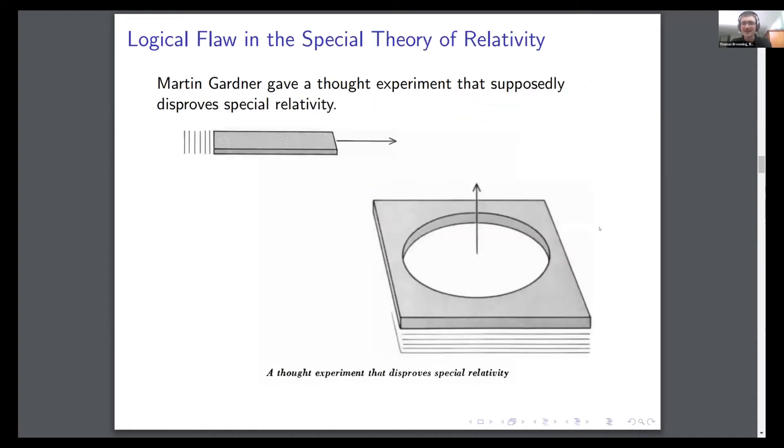But at the time, people didn't really understand computers and machine learning wasn't really a thing, so who knows? The next one was this apparent logical flaw in special relativity. This is apparently a well-known thought experiment. It doesn't actually disprove special relativity, but you have to think about it in the right way. It's called The Ladder Paradox.